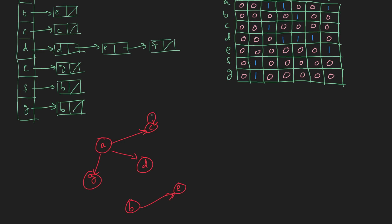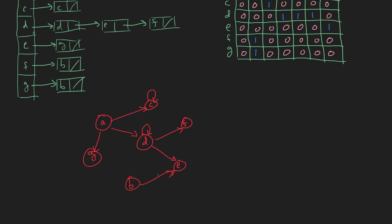For D, there's an edge from D to D, so this also has a self-loop. There's an edge from D to E. And there's also an edge from D to F, so let's draw our F node. E has an edge to G, so we have an edge from E to G. And from F, we have an edge to B. And then G also has an edge to B. That works out.